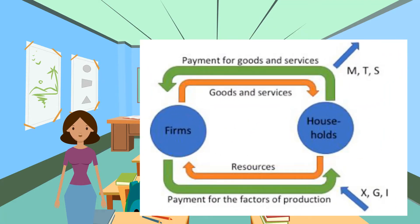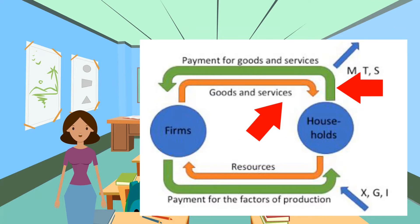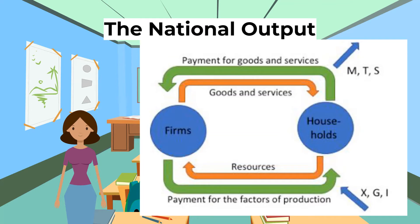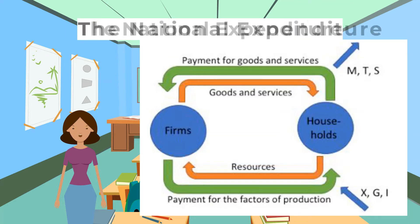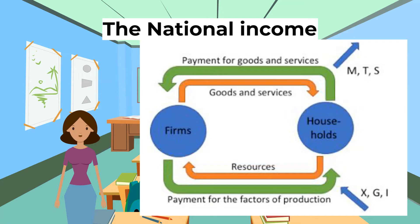Looking at national income, the first thing we need to look at is the circular flow of income. The most basic form of the model shows a two-sector economy with just the households and the sellers. Households own all the wealth and resources, so they provide firms with land, labour, and capital, in return for rent, wages, interest, and profits. They use this money to buy goods and services produced by the firms. Money, represented by the green arrows, flows in one direction, and goods, services, and factors of production, shown by orange arrows, flow in another. In this model there are three ways of measuring the level of economic activity: national output, national expenditure, and national income paid by firms to households.